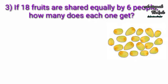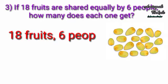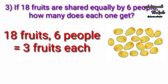If 18 fruits are shared equally by 6 people, how many does each one get? Distribute the fruits among six people, one by one. They will get 3 fruits each.